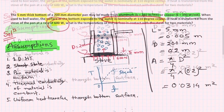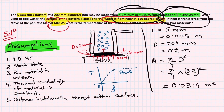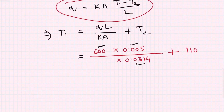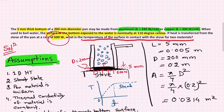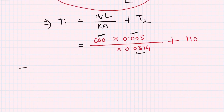The first case is aluminum. What is the temperature of the surface in contact with the stove for aluminum? If the material is aluminum, we look up the thermal conductivity value and solve for T1 using the equation.